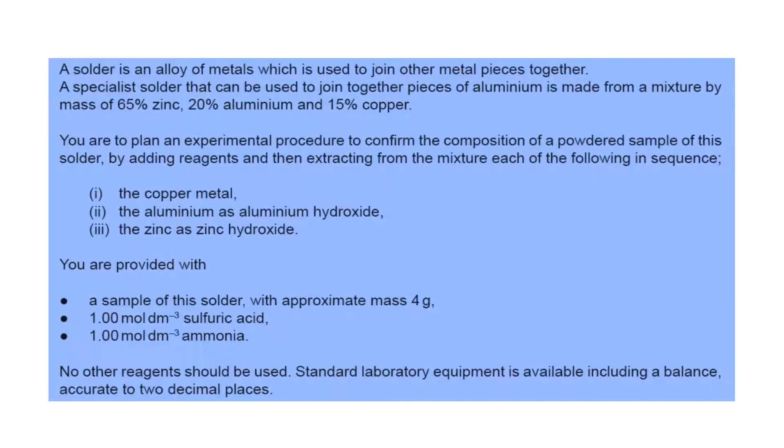The first question is about extraction of different metals from an alloy. The alloy consists of zinc, aluminum, and copper. The highest amount is zinc, the lowest amount is copper. The reagents are sulfuric acid and ammonia.